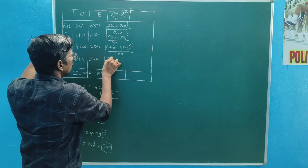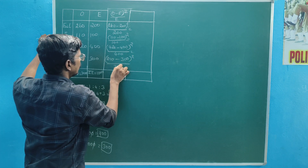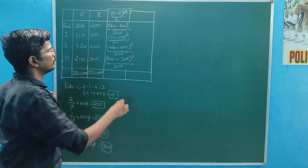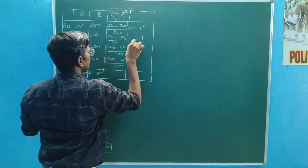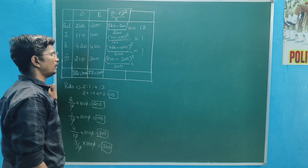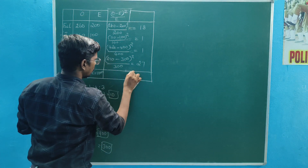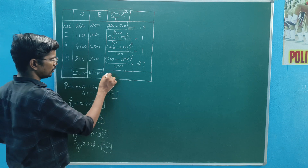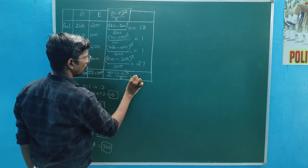210 minus 300 whole square divided by 300. Summation: O minus E whole square divided by E.